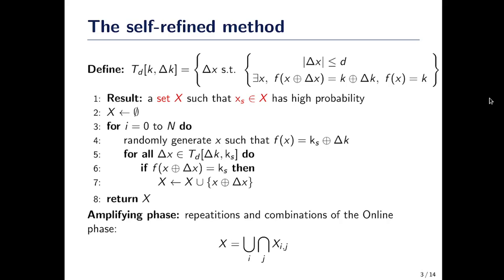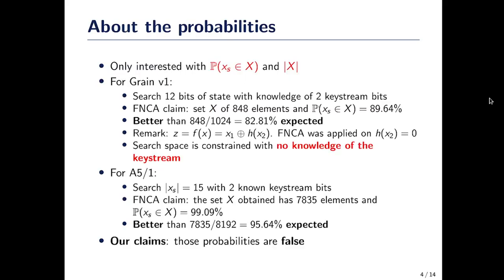The only things you use in the online phase is the knowledge of the keystream. So basically, if you have two states that give you the same keystream, you shouldn't be able to differentiate between these two states using this method. That's really why this method has issues — what interests us is the set X at the end, and more precisely the size of the set X and the probability that a good internal state is in the set.